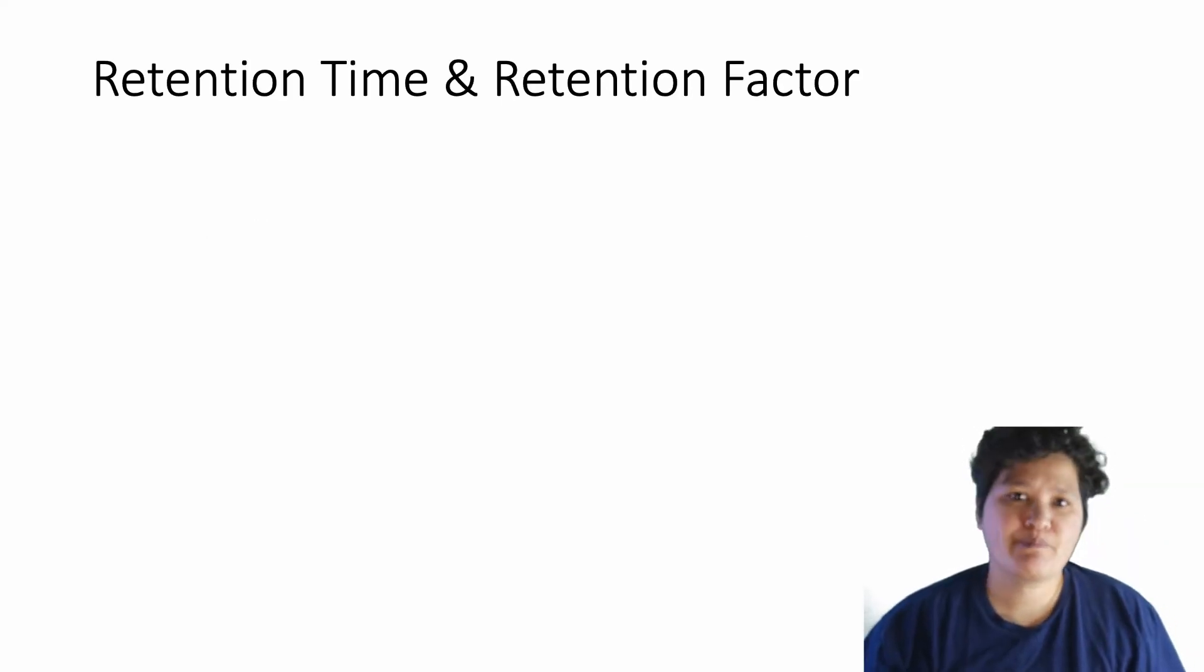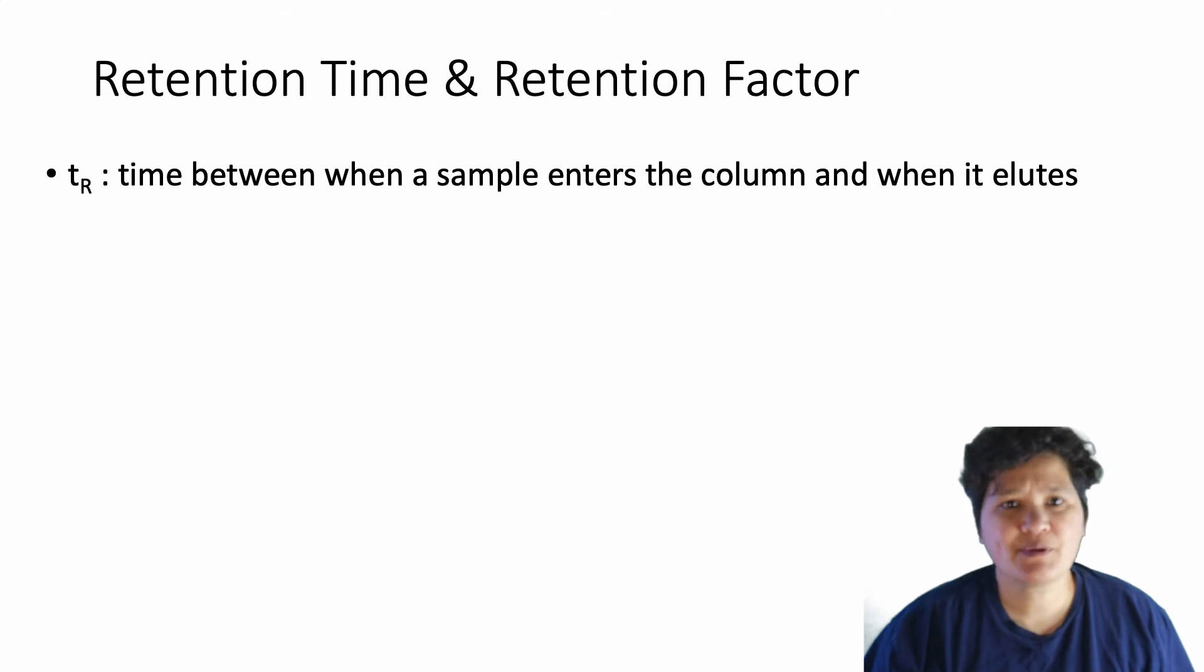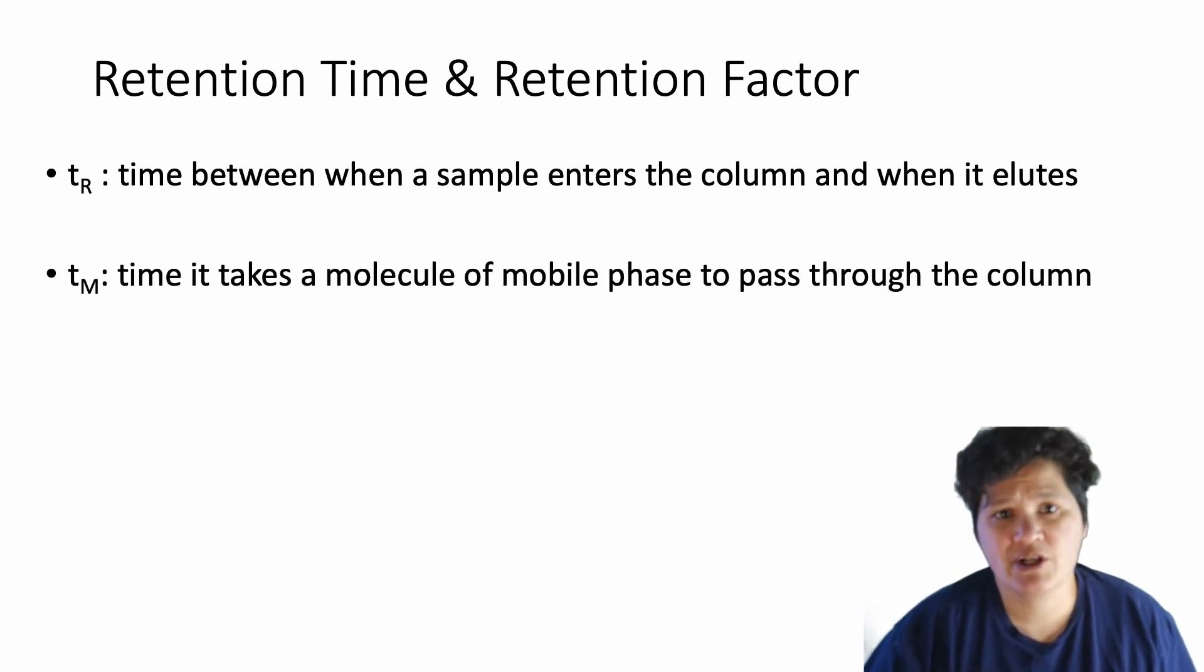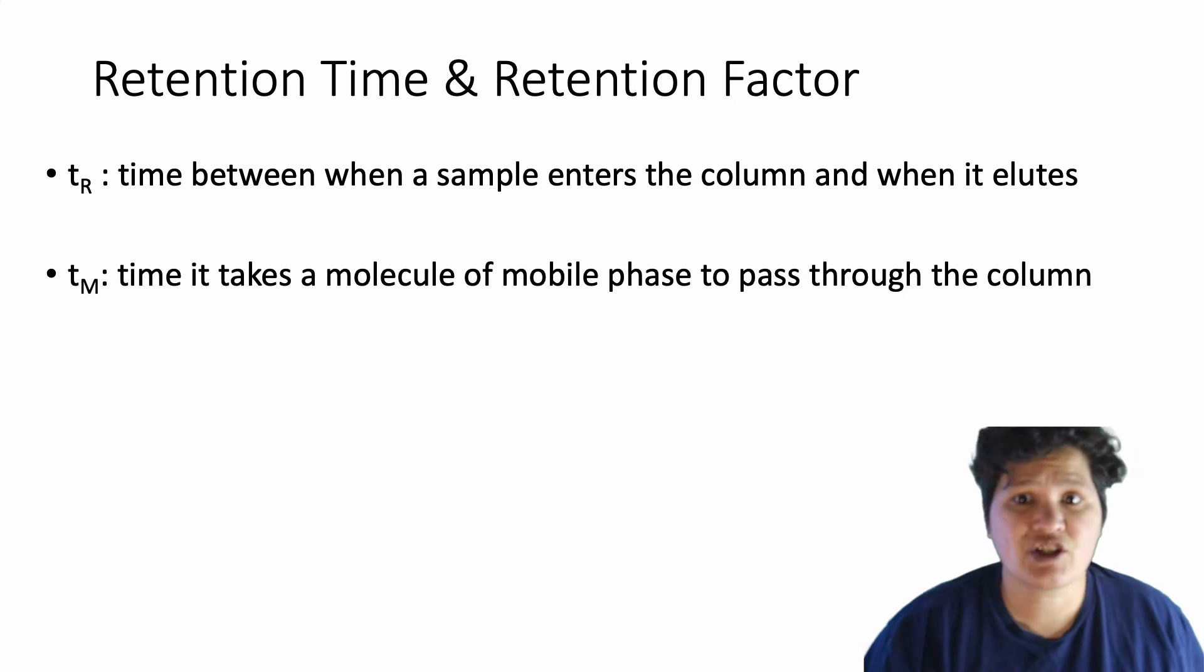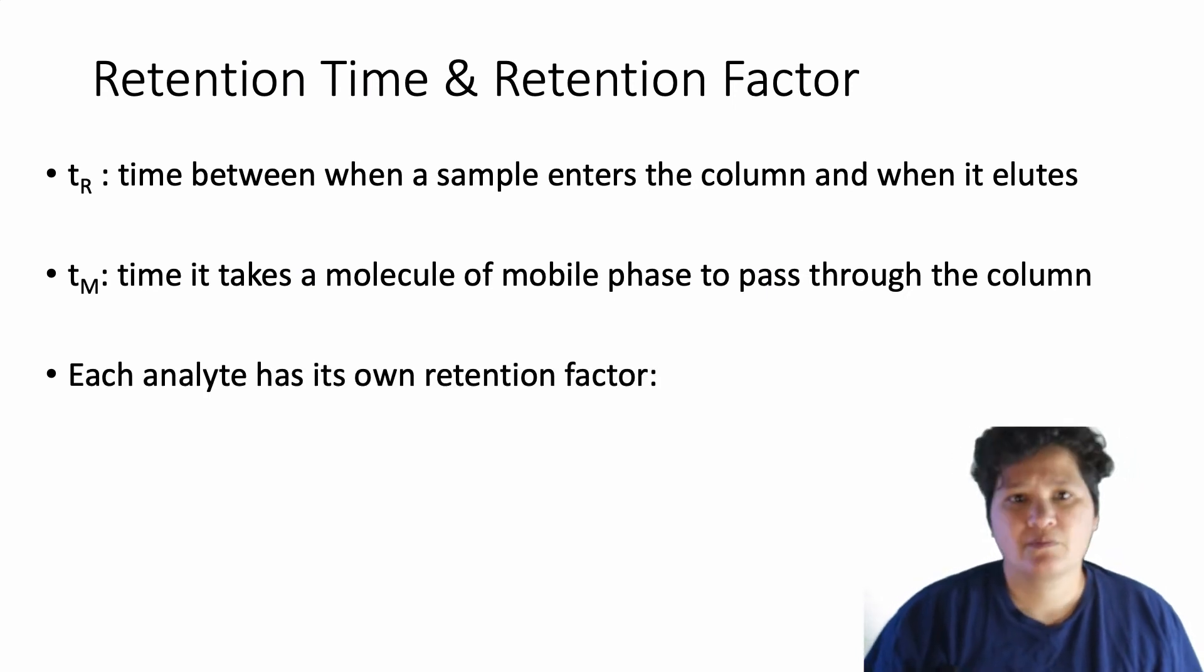Retention time is basically the time between when a sample enters the column and when it elutes or emerges from your column and into your detector. The instrument will generally measure that for you, and you'll see that written as T sub R. You can compare this then to the time we call T sub M, which is how long it takes a molecule of mobile phase to get through the column. Now if T sub R equals T sub M, that means your analyte is always in the mobile phase, so it's moving just as fast as the mobile phase, and it never sticks to the stationary phase.